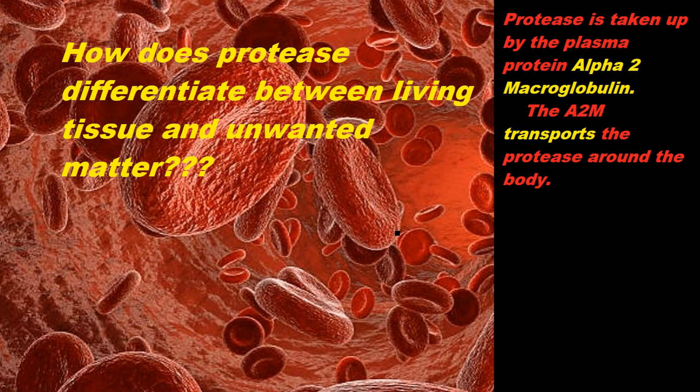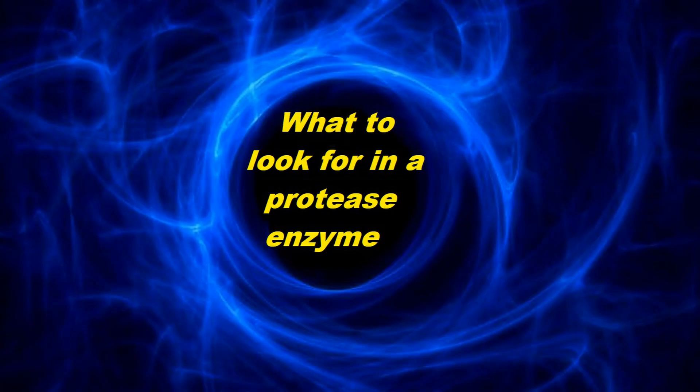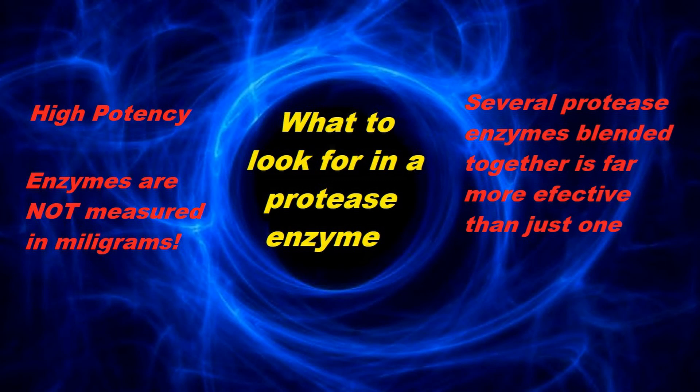Oral proteases come in many forms, so it's important to look for a high protease product that uses numerous forms of these enzymes. The greater the number of proteases combined in the formula, the more effective the product. Look for a product that combines plant-based proteases with other proteolytic enzymes like serrapeptase, catalase, and nattokinase. All of these enzymes have the ability to break down different forms of protein and support the immune system in unique ways that herbs and traditional nutraceuticals really can't.